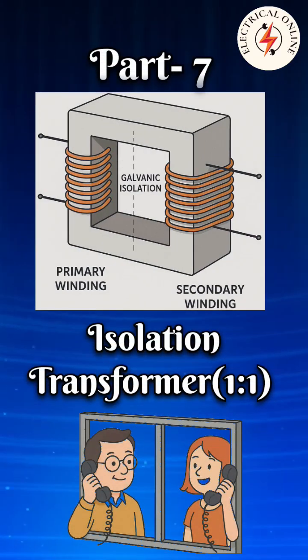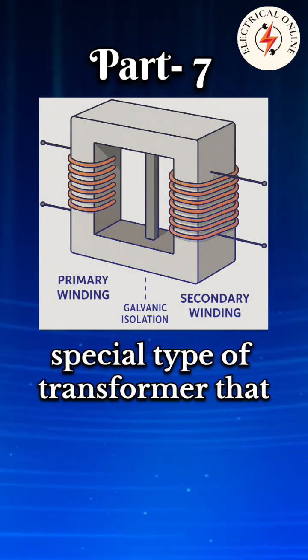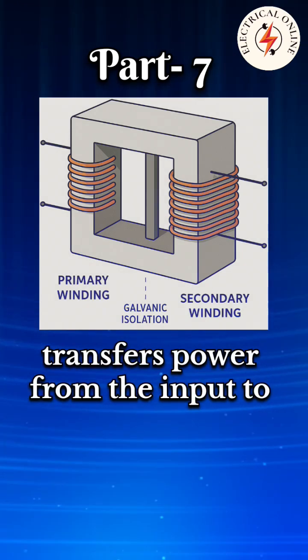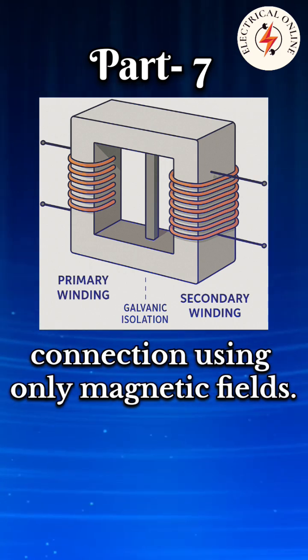In transformer type series, the seventh one is isolation transformer. An isolation transformer is a special type of transformer that transfers power from the input to the output without any direct electrical connection, using only magnetic fields.